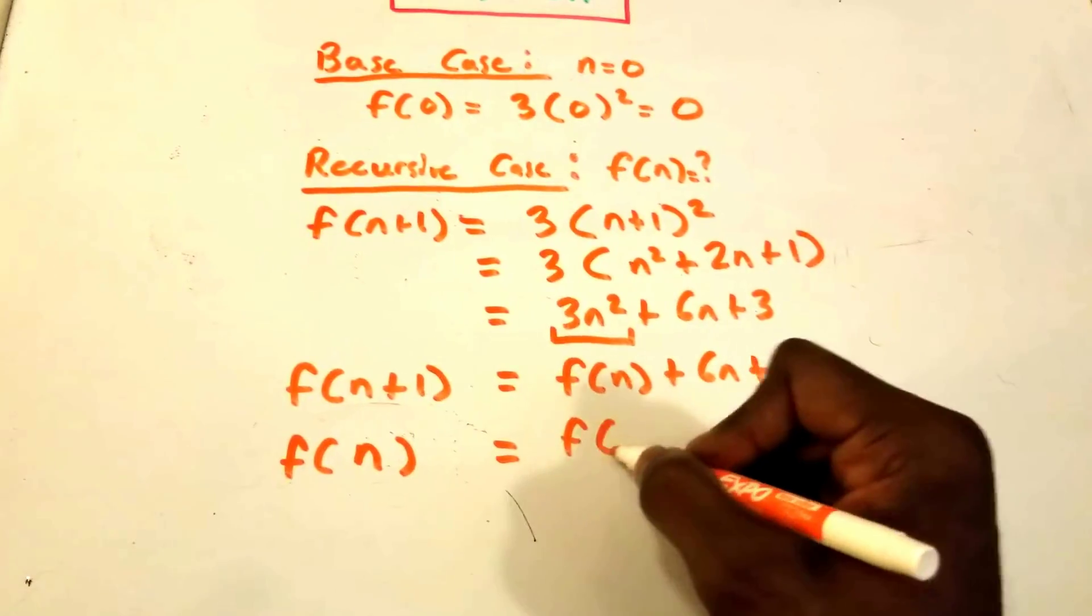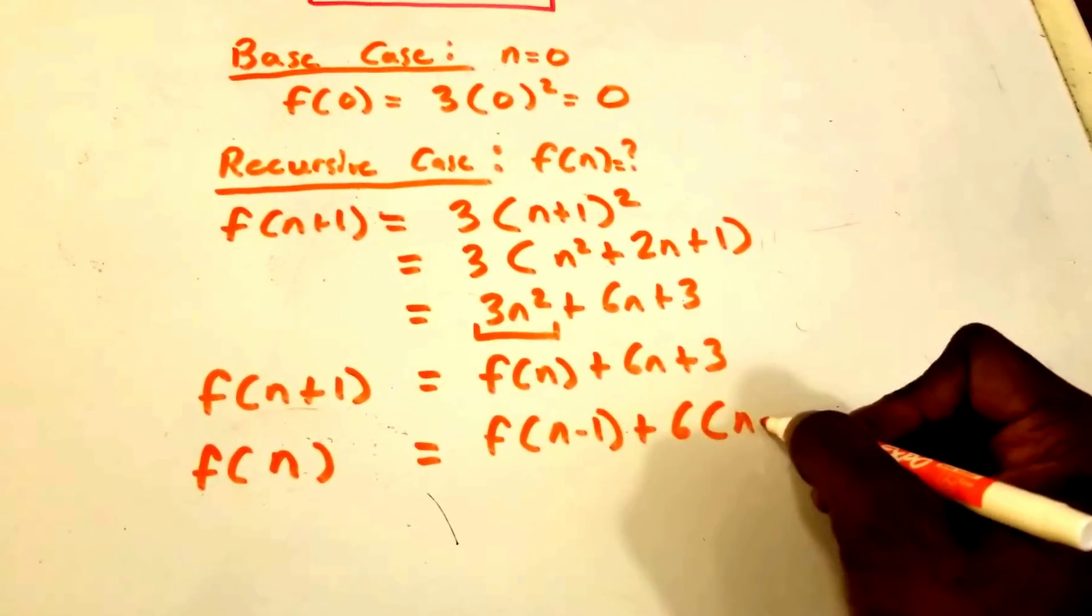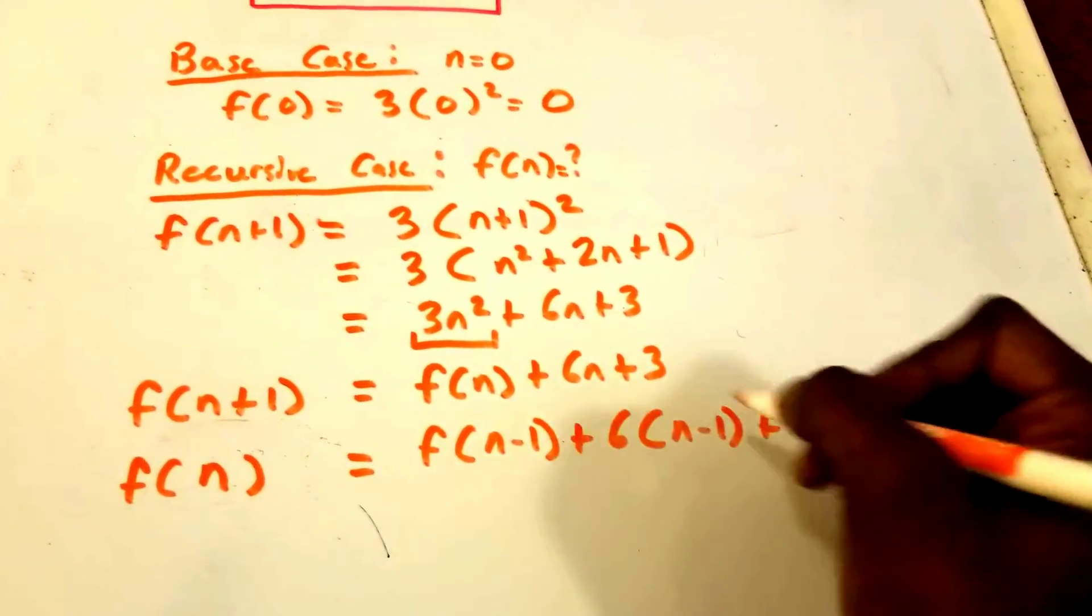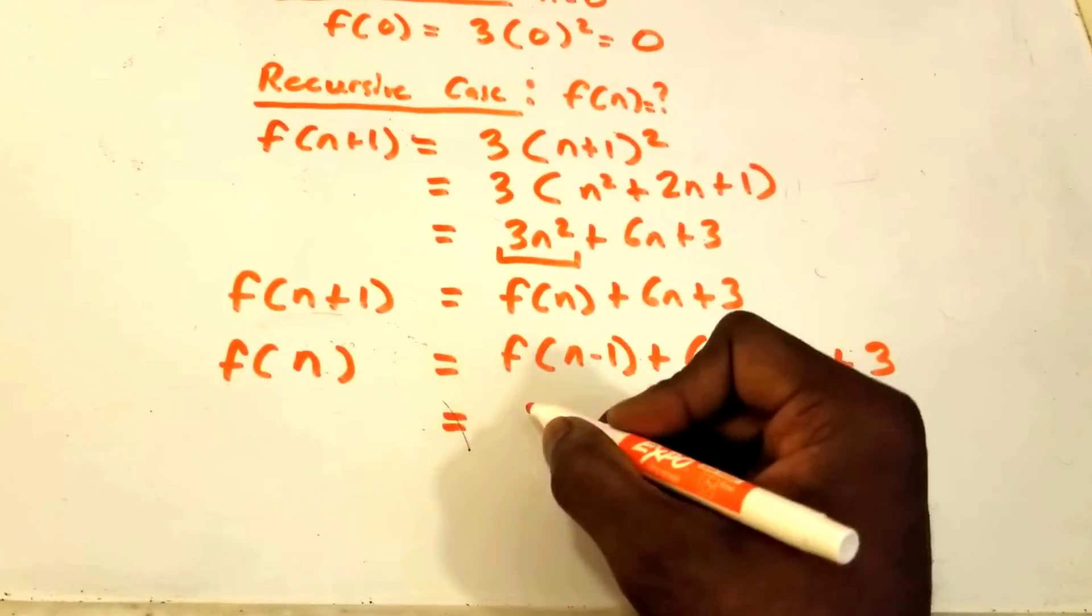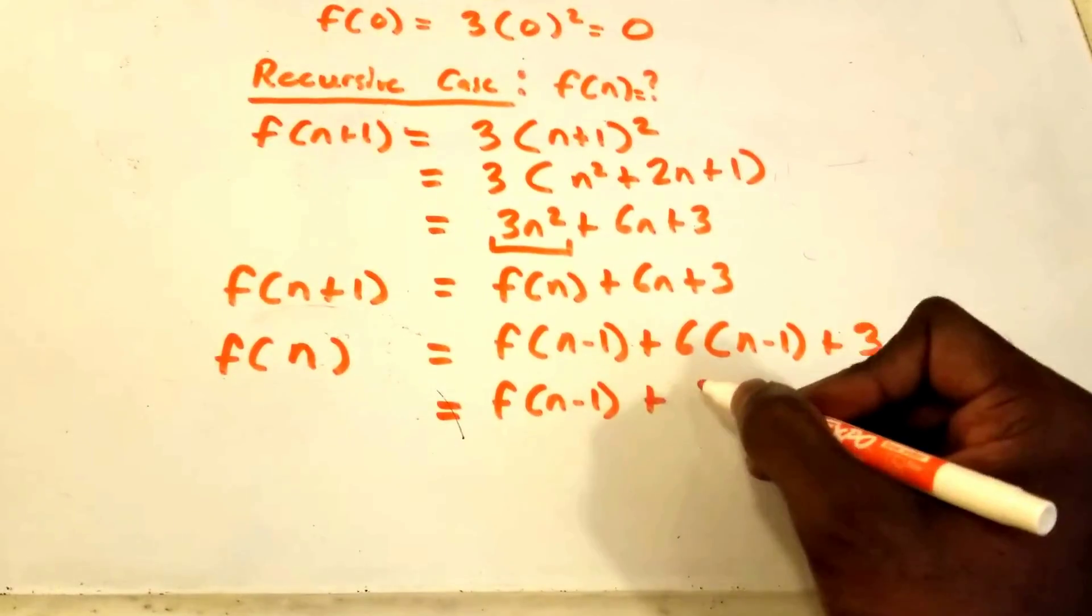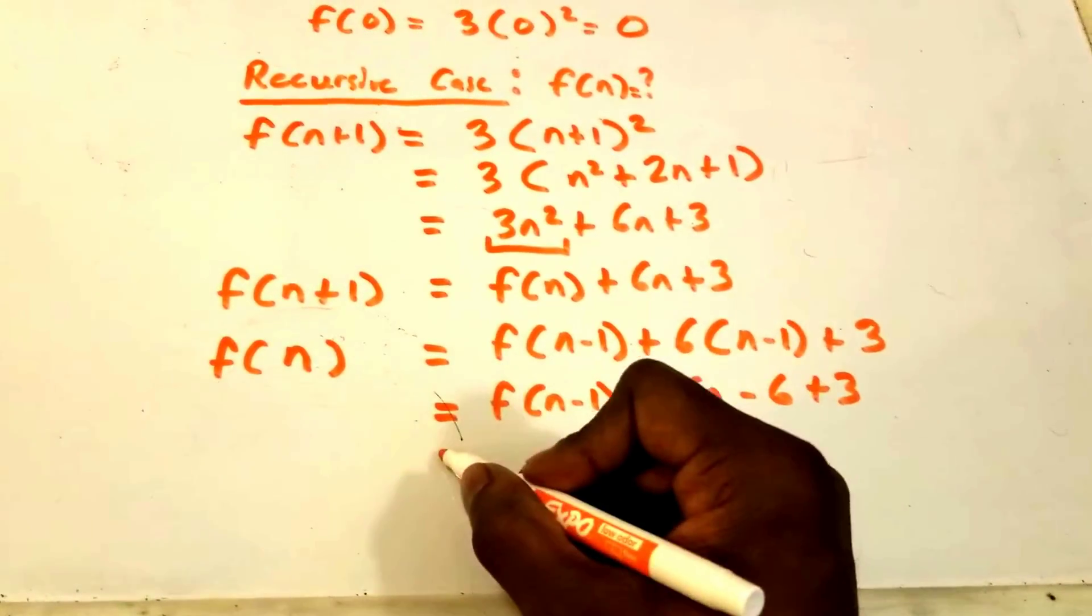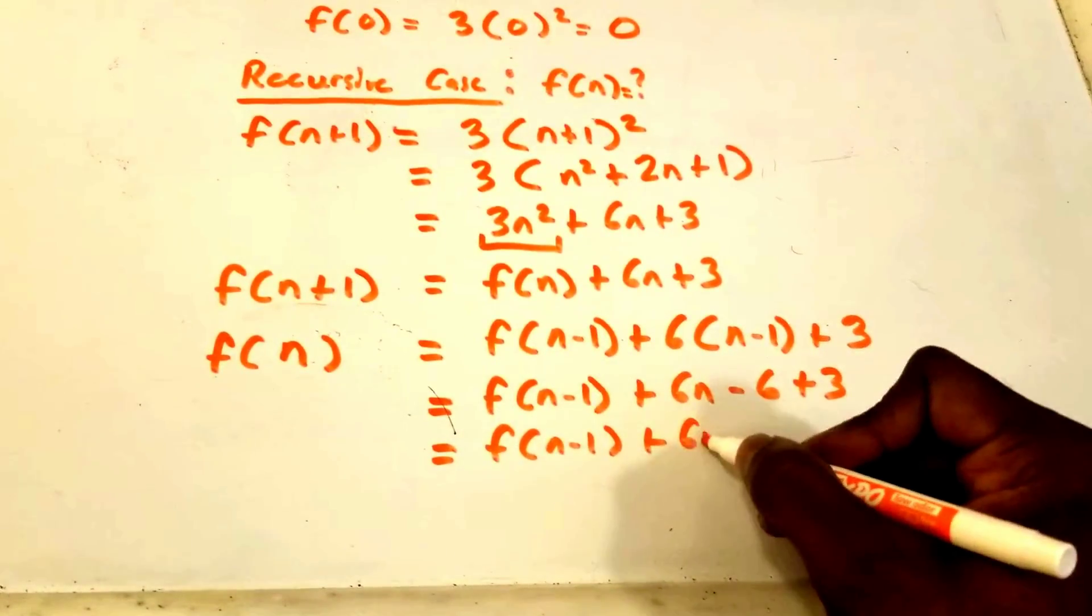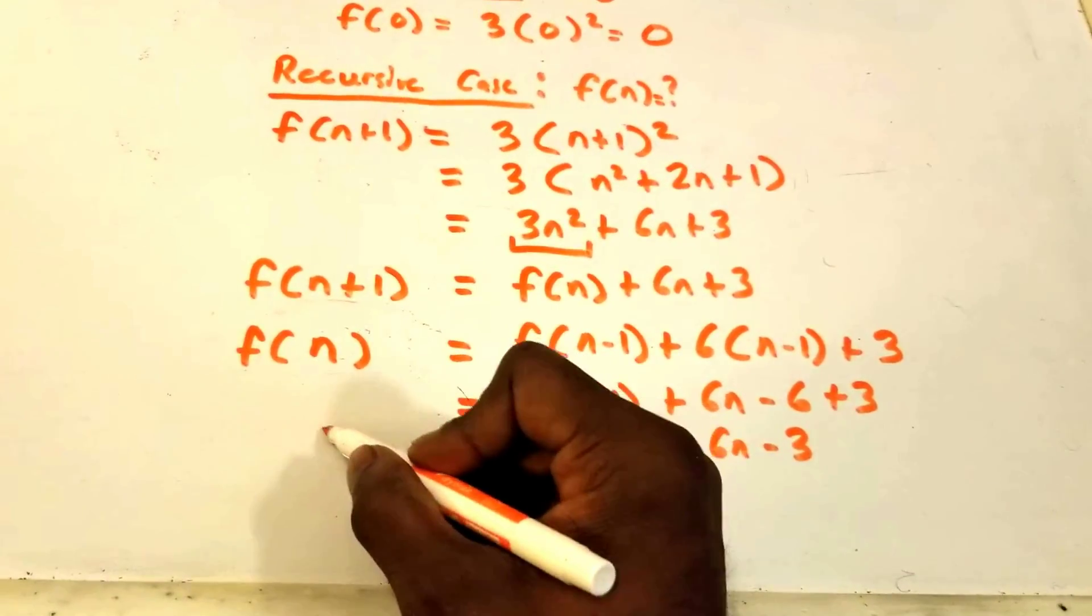And it's going to be f(n-1) + 6 times (n-1) + 3. So now this is equal to f(n-1) + 6n - 6 + 3, and this is equal to f(n-1) + 6n - 3. So that's our f(n).